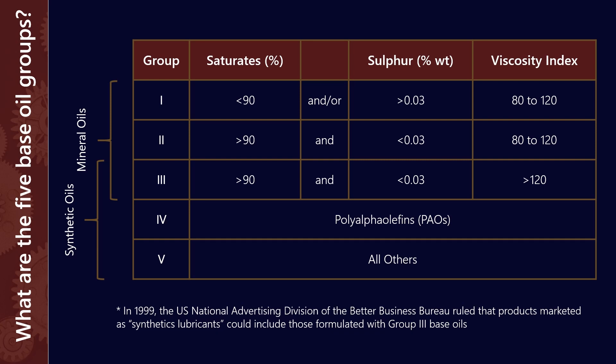Then we come to group 5. Now, group 5 is tricky because it does contain some full synthetics. Polyalkylene glycols, also known as PAGs, are an example. Alkylated naphthalenes, for example. Synthetic esters. These are all full synthetic molecules.